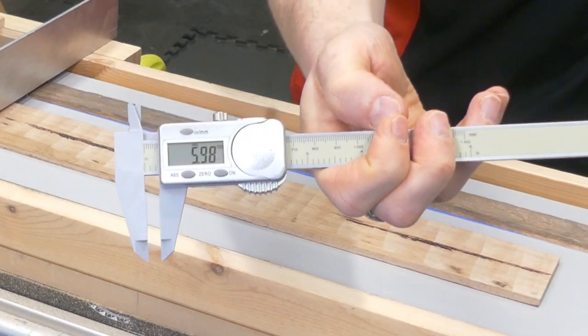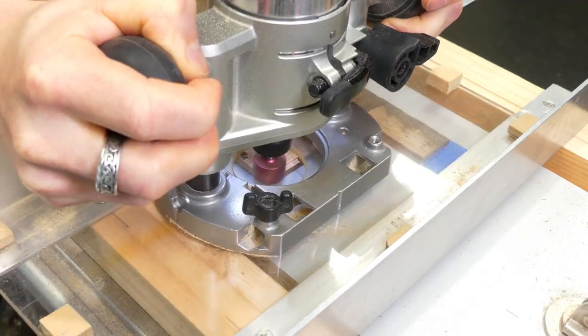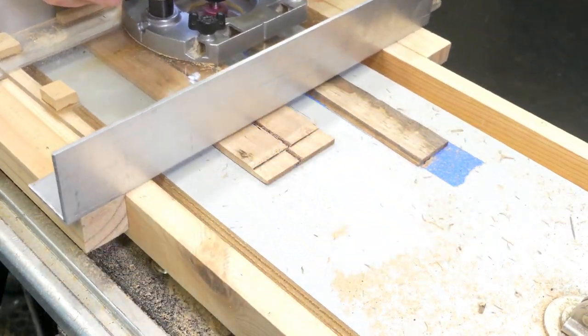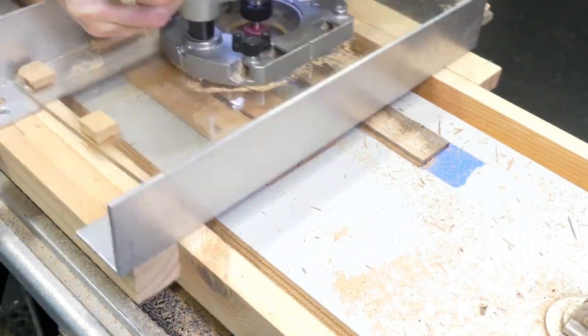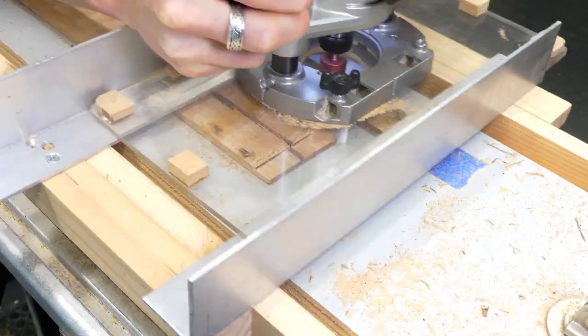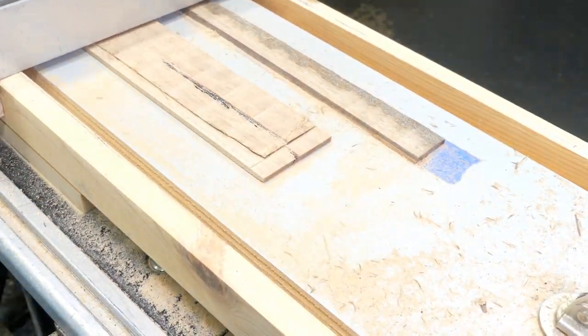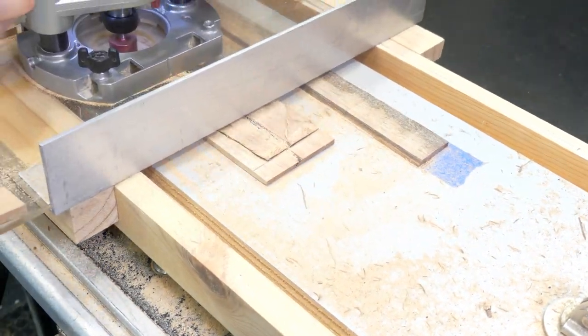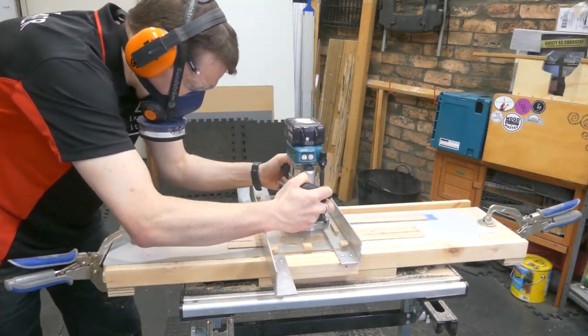They're starting at six mil-ish or about a quarter of an inch. I then figured out I could go longways and that saved me quite a lot of time. By the end of it all, the router had gotten me down to about an eighth of an inch or three mils.